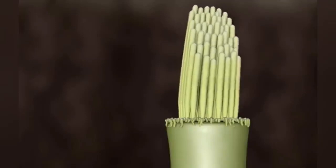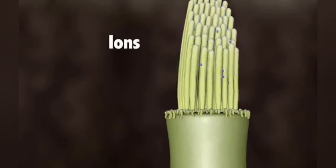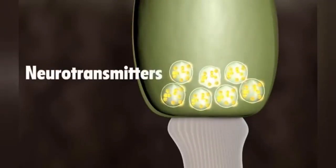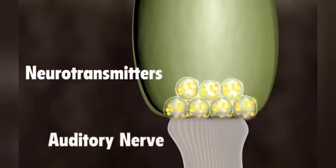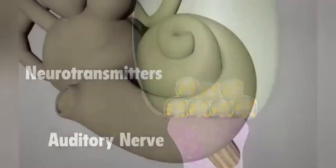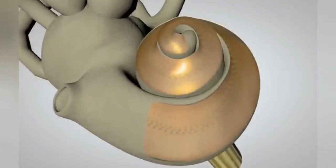As the hair bundles are moved, ions rush into the top of the hair cells causing the release of chemicals at the bottom of the hair cells. The chemicals bind to the auditory nerve cells and create an electrical signal which travels along the auditory nerve to the brain.